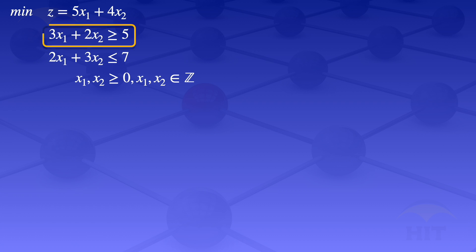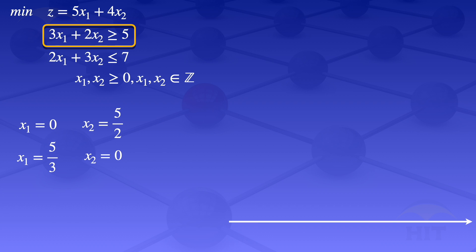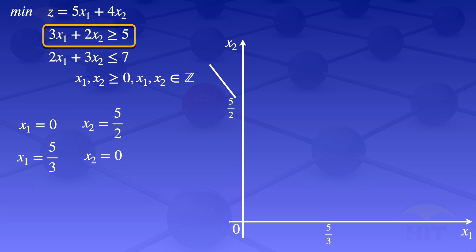I'll look at the constraint 3x1 plus 2x2 greater than or equals to 5. To plot the line representing that constraint: when x1 equals 0, x2 equals 5 divided by 2; and when x2 equals 0, x1 equals 5 over 3. I'll use these points to plot the line on the graph, with x1 on the horizontal axis and x2 on the vertical axis, then join those two points using a straight line.